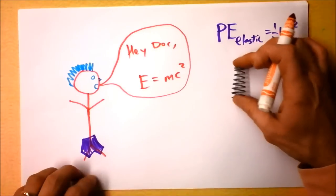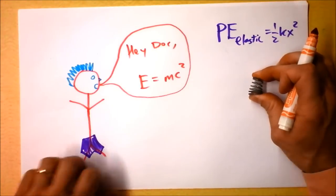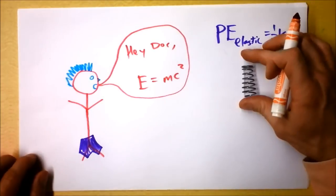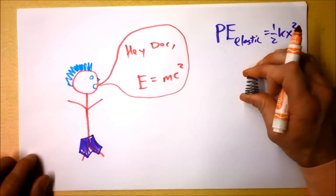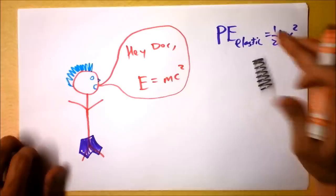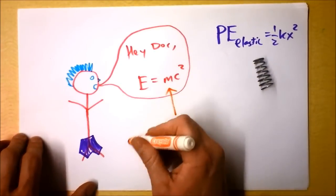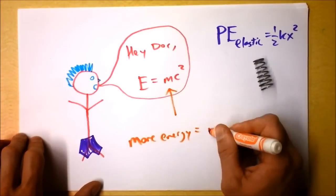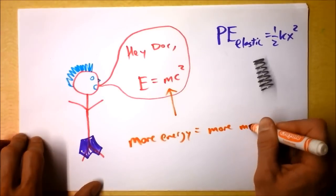That means, in fact, when I compress this spring, it has more gravitational attraction to the other things near it. Yes, when I compress the spring, it is more attractive gravitationally because it actually has more mass. More energy equals more mass.